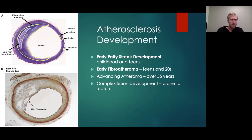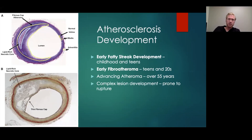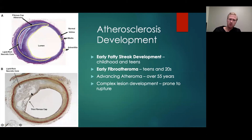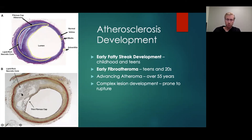What happens early on? First, you have early fatty streak development, which can happen as early as in childhood — just slight changes in the vessel wall. Then you can have an early fibro-atheroma in your teens and twenties, advancing into a true atheroma, more like what you see here, over the age of 55. You can advance further into complex lesion development with necrotic areas, calcifications, and areas that are prone to rupture.